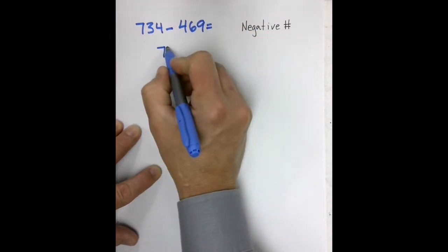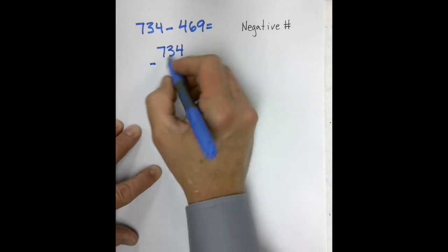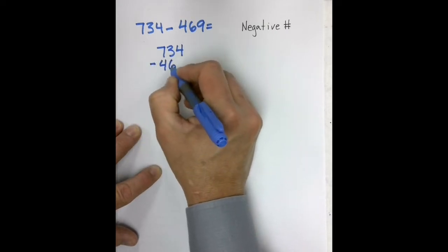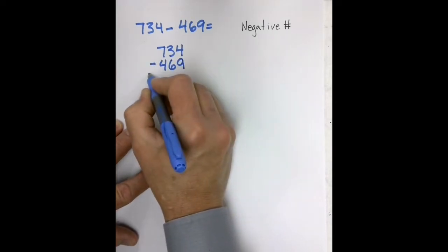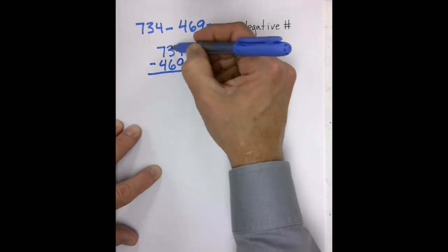So I would start with our larger number, and I would stack the smaller number underneath, making sure place value positions stay the same: ones, tens, hundreds.